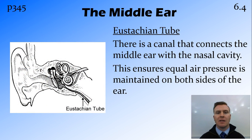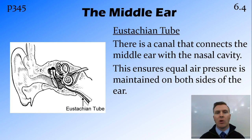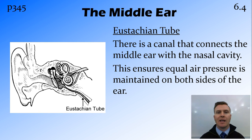Another part of the middle ear is the eustachian tube. The eustachian tube is a canal that runs from the middle ear into the nasal cavity. Its job is to ensure that the air pressure in the middle ear is the same as the air pressure outside the body, and in particular in the outer ear. This means that the tympanic membrane is able to vibrate freely and not be dampened by the change in pressure in the middle ear. And it's also why, when you get a cold, you have trouble hearing, because that eustachian tube gets blocked and therefore you can't equalise that pressure.